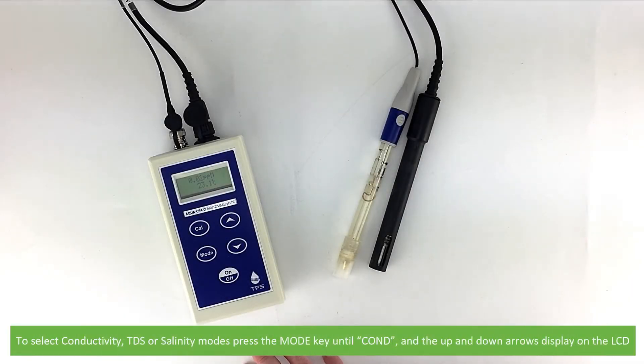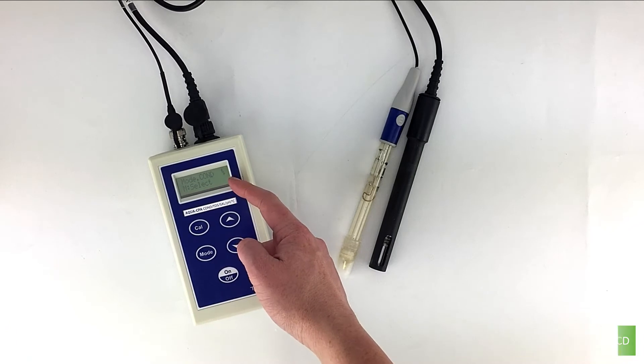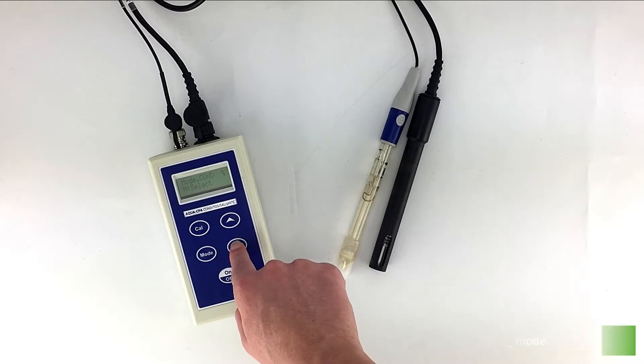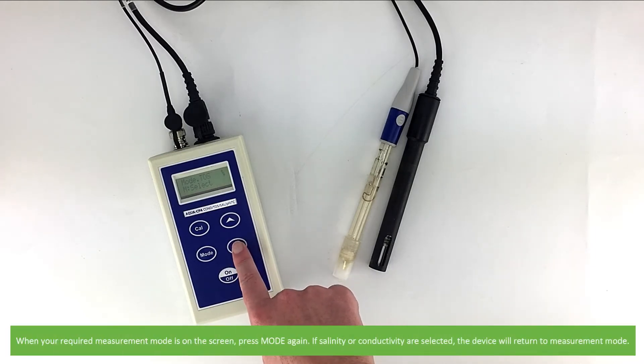For mode selection, to select conductivity, TDS or salinity modes, press the mode key until COND and the up and down arrows display on the LCD. Then use the arrows to select between conductivity, TDS or salinity measuring mode. When your required measurement mode is on the screen, press mode again.